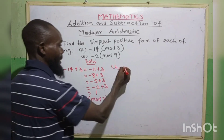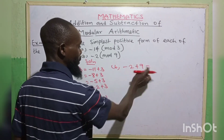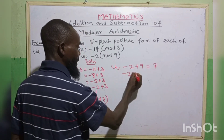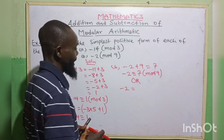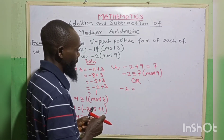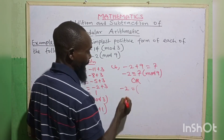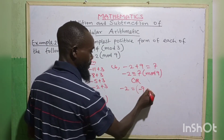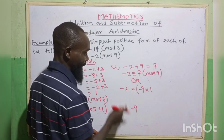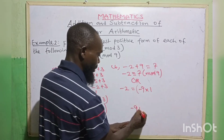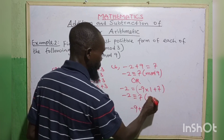The second one: minus 2 in modulo 9. We add the modulo: minus 2 plus 9 gives 7. So minus 2 is equivalent to 7 in modulo 9. Alternatively, minus 9 multiplied by 1 is minus 9 — what can we add to minus 9 to give minus 2? That is plus 7. So minus 2 is equivalent to 7 in modulo 9.